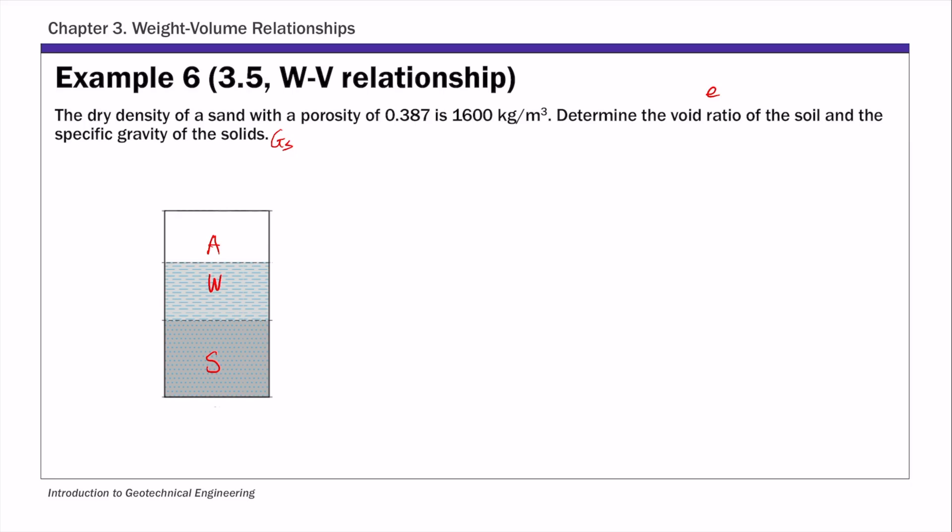For this example, we only need the volume of the voids, so it doesn't matter if you have two or three phases here. Since we're given density, we are going to have a mass side with unit kg, and then the volume side with unit meter cube.